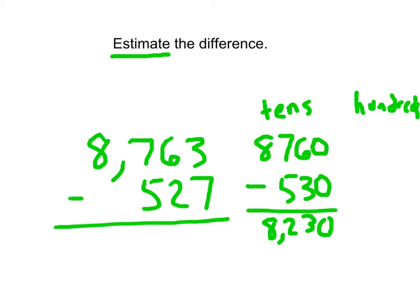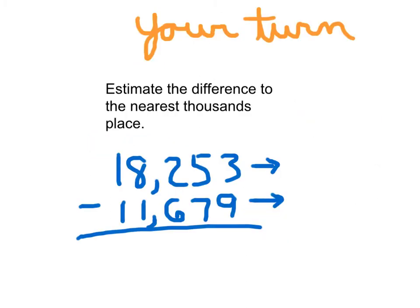If we had chosen to estimate to the nearest hundreds place, we would have rounded that first number to 8,800. The second number we would have rounded to what? Right, 500. And then subtracting those two, we would have 8,300. Both of those here are valid estimates. We just chose different places to round them to. Again, when you're estimating the difference, you do have to do these steps here still. You cannot, cannot figure out an exact answer and then round it.